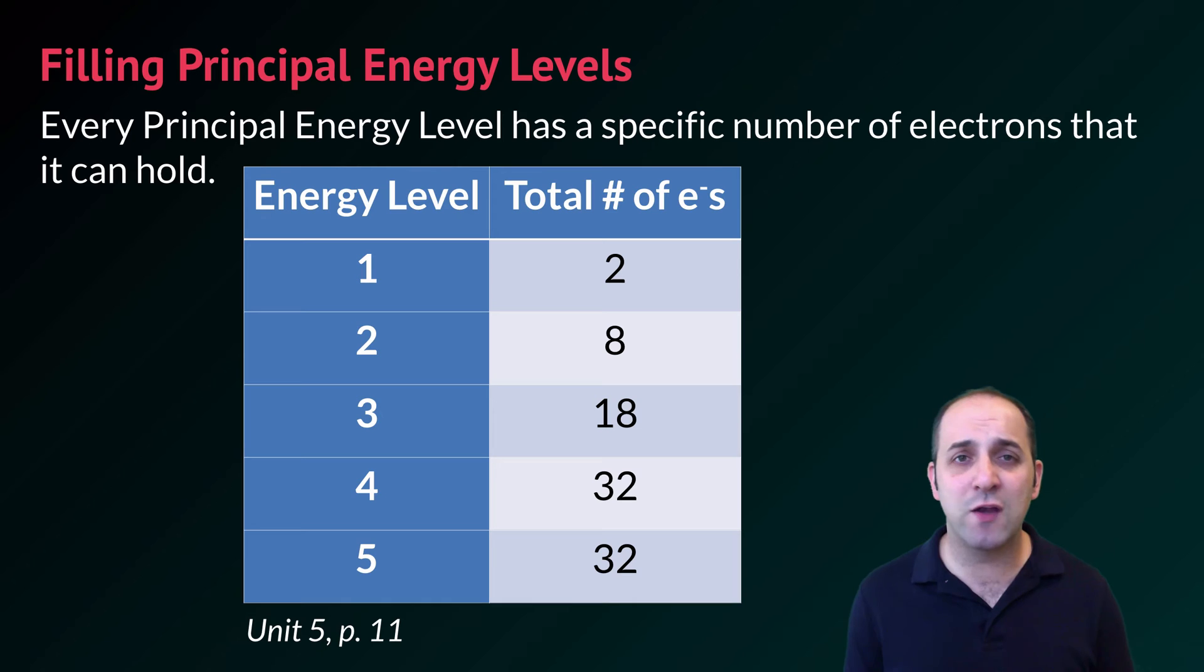You don't really need to worry about how many electrons fit in the sixth and the seventh principal energy levels but if you want you can totally look them up if you really need to know. Almost without exception all the atoms that we're going to deal with when we look at electron configurations are going to occupy the first five principal energy levels.